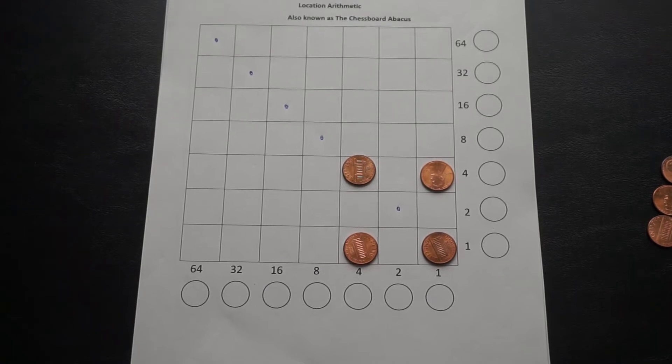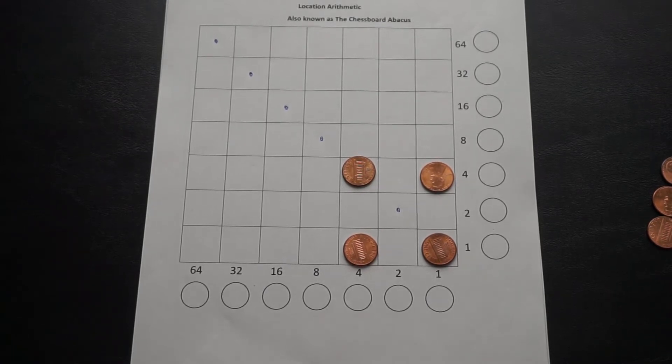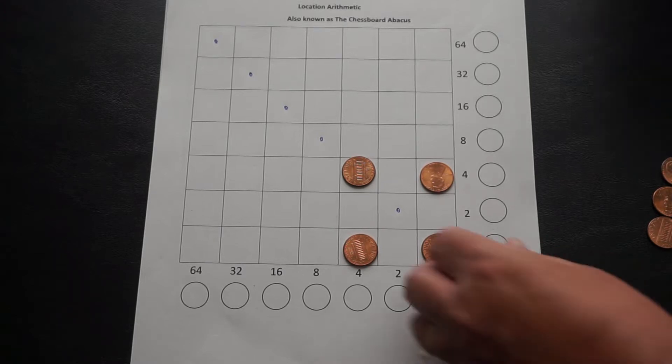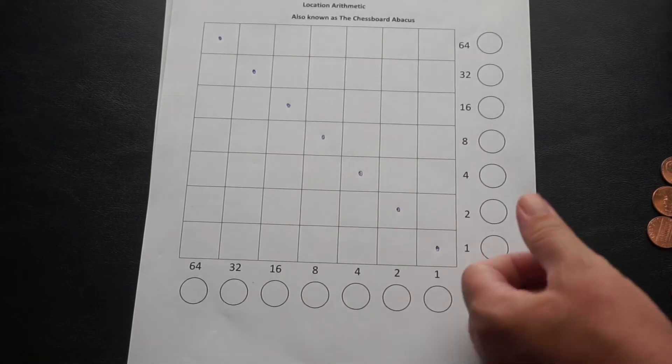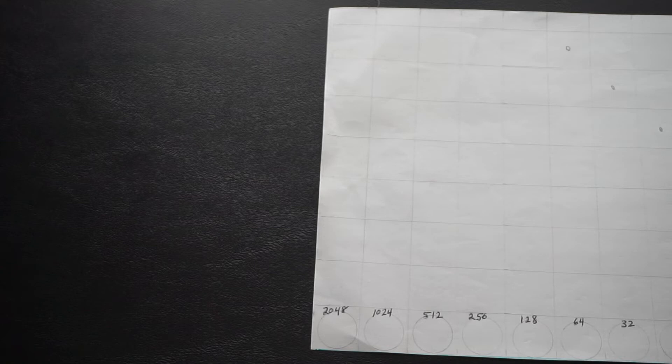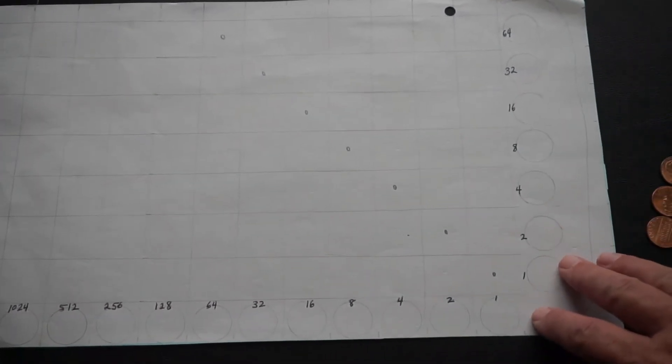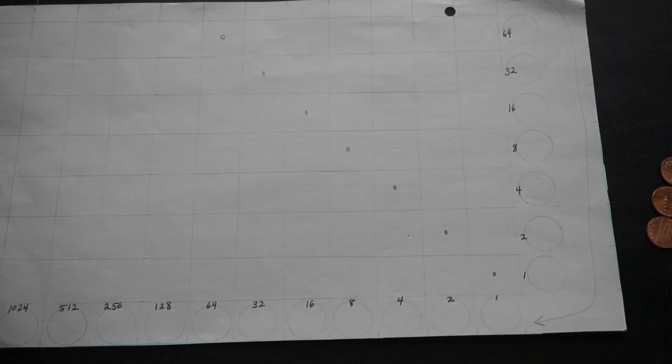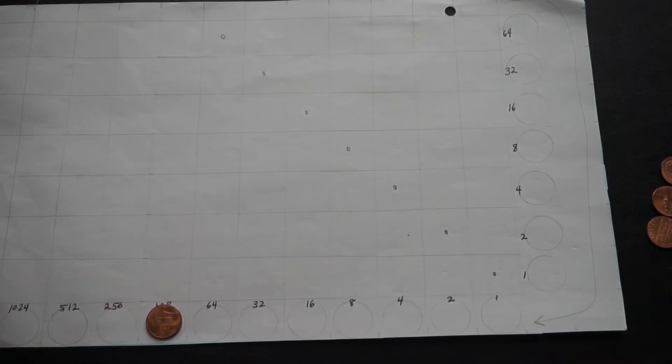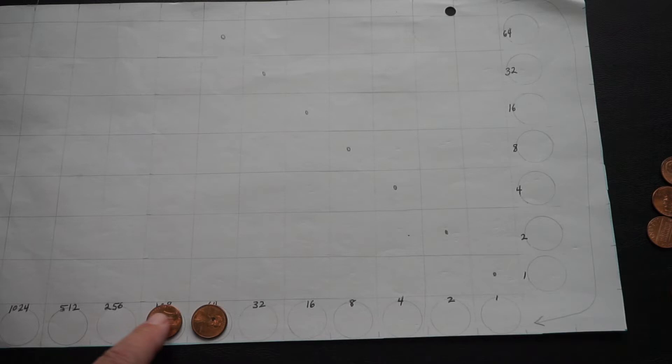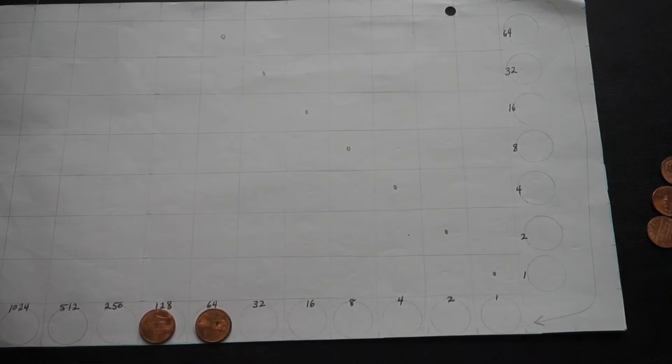We are actually going to try a higher number, and that's going to require us to use a larger board. You can make these boards as large as you want to in order to work with numbers as large as you would like them to be. So I have a board here that goes all the way up to 2048. We're not going to go quite that far. But I do want to take the square root of 196. 196 is 128 plus 64 plus 4.